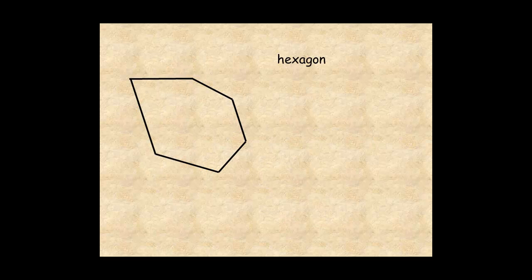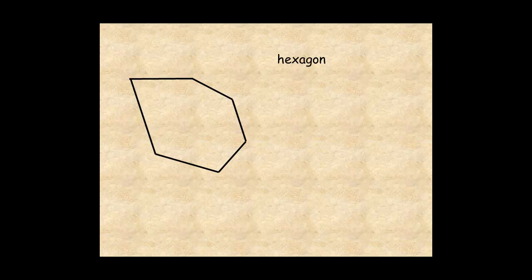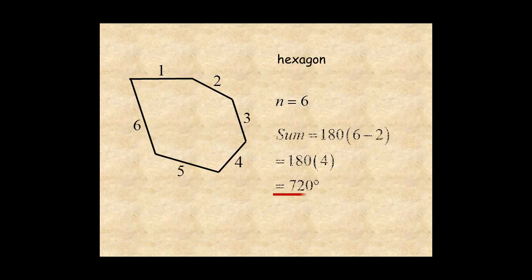An irregular figure with six sides is still a hexagon, and the sum of its interior angles is still 720 degrees. It doesn't matter whether the polygon is regular or not.